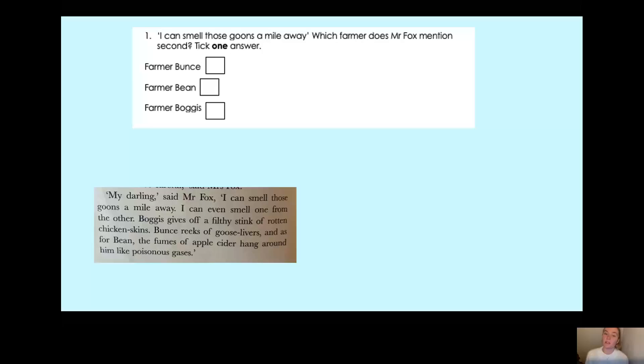So let's look at our first sequencing question. It says, I can smell those goons a mile away. Which farmer does Mr. Fox mention second? Tick one answer. When it says tick one answer, you really need to make sure that you're only ticking one answer to get the mark.